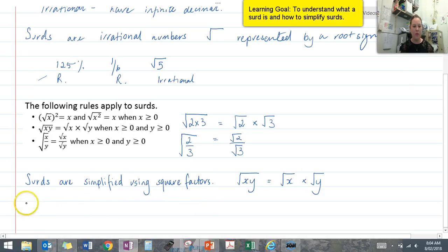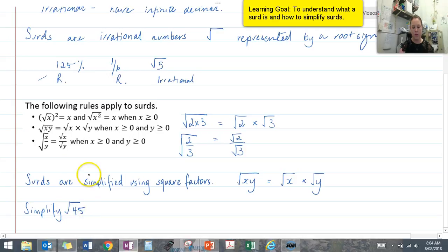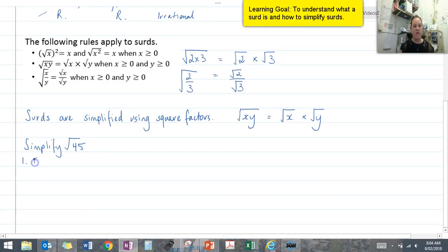Alright, so let's do an example. We want to simplify the square root of 45. So the first thing I'm going to do is find the factors of 45. You should know that those factors are 5, 9, 1, and 45. From those, we're going to identify which ones are square factors. So in this case, we look at 5 and 9.